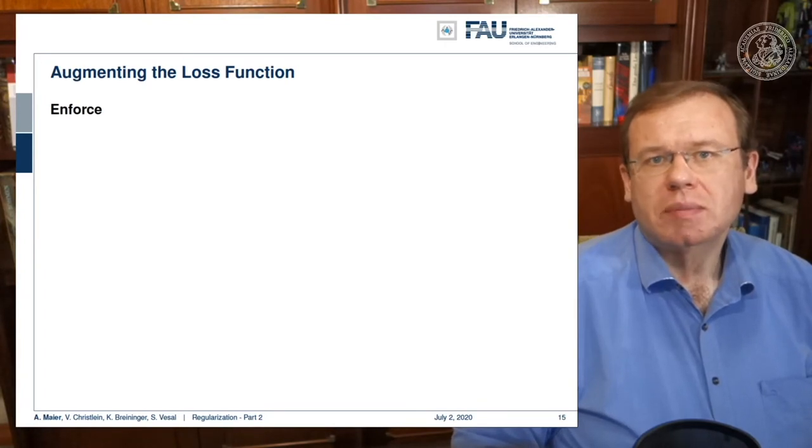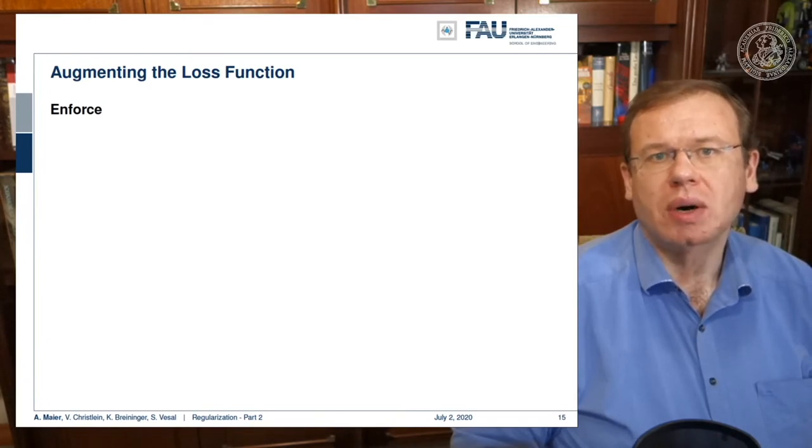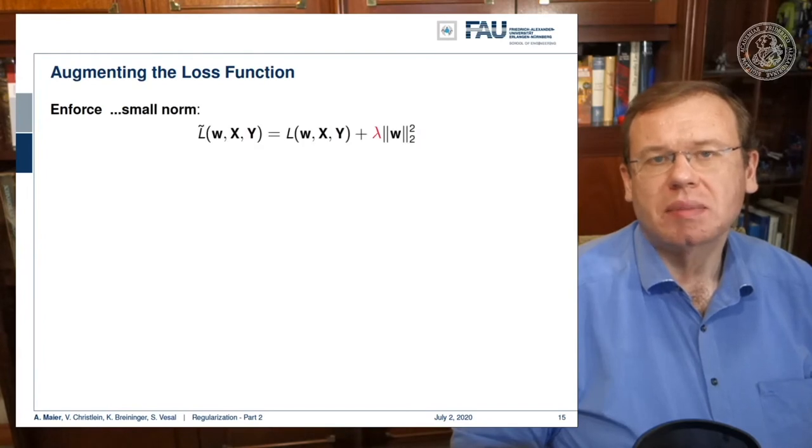Now the interesting part is that this MAP estimate can be reformulated. If you attended pattern recognition, you know what I'm talking about. We've seen that the maximization of the maximum likelihood estimates results in a minimization of the negative log likelihood. The typical loss functions that we are talking about have this form.